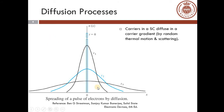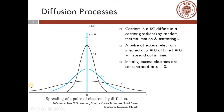Let us consider this figure. Assume that a pulse of electrons is injected at x = 0 and at time t = 0. The concentration of electrons is maximum at t = 0 and x = 0. With passage of time, the pulse of electrons will spread out. Initially the electrons were concentrated at x = 0, and as time passes, electrons start diffusing to regions of lower concentration. This diffusion occurs until the concentration n(x) is constant throughout.